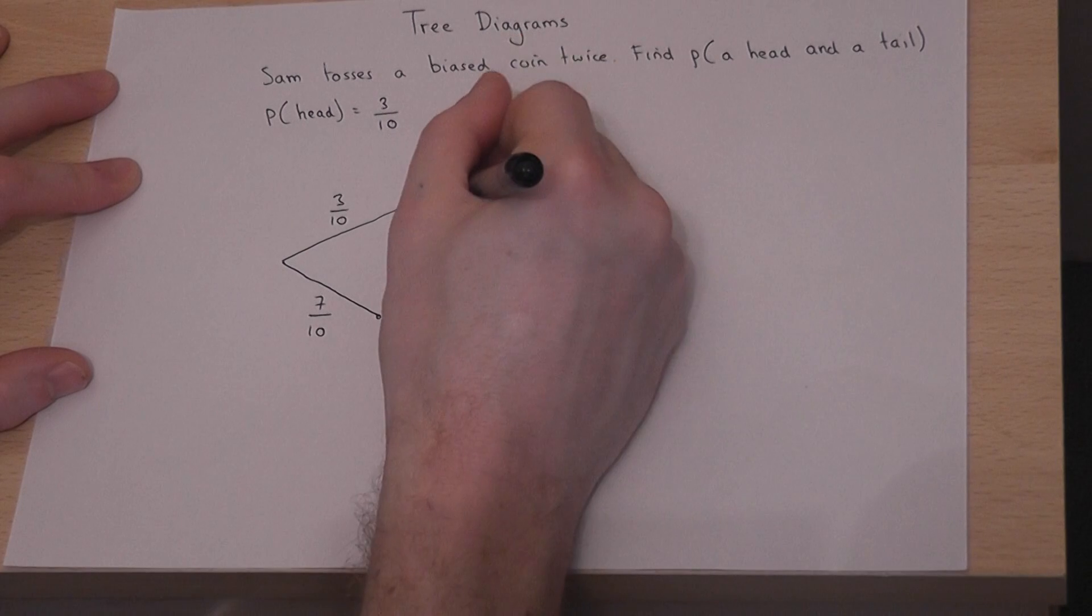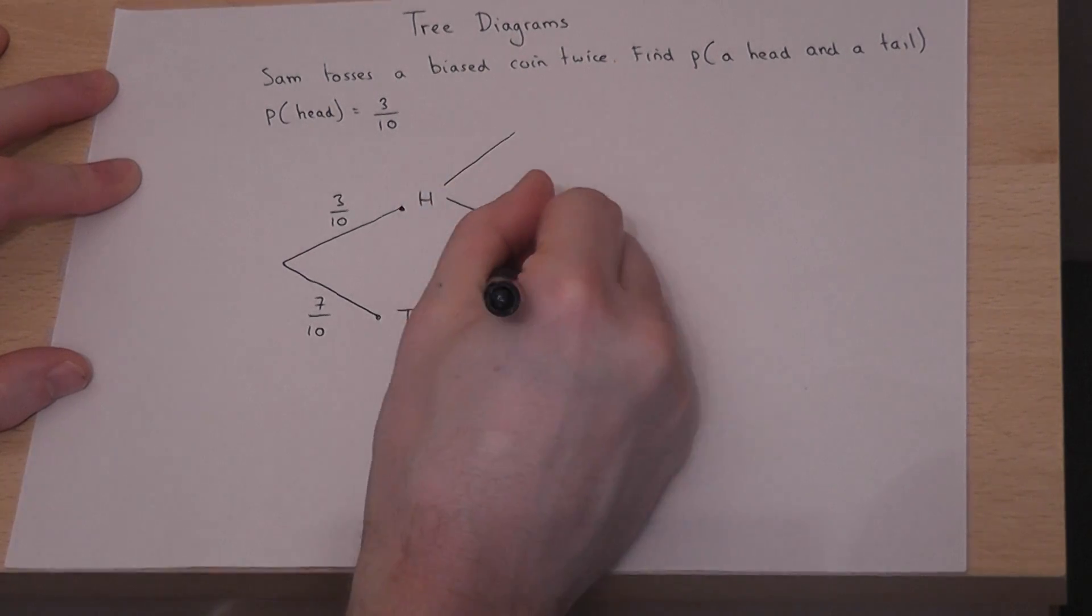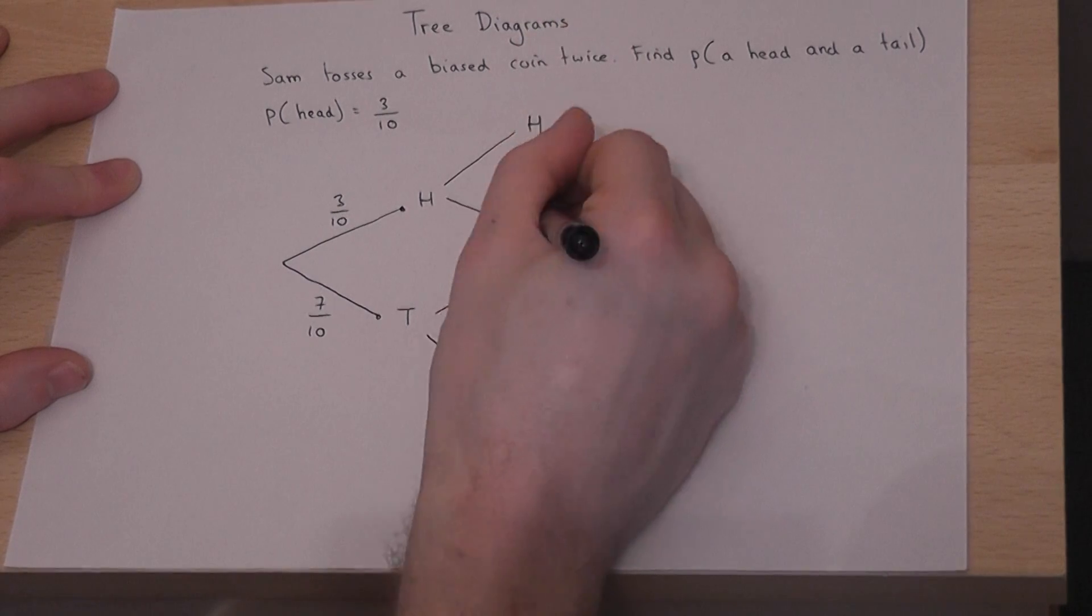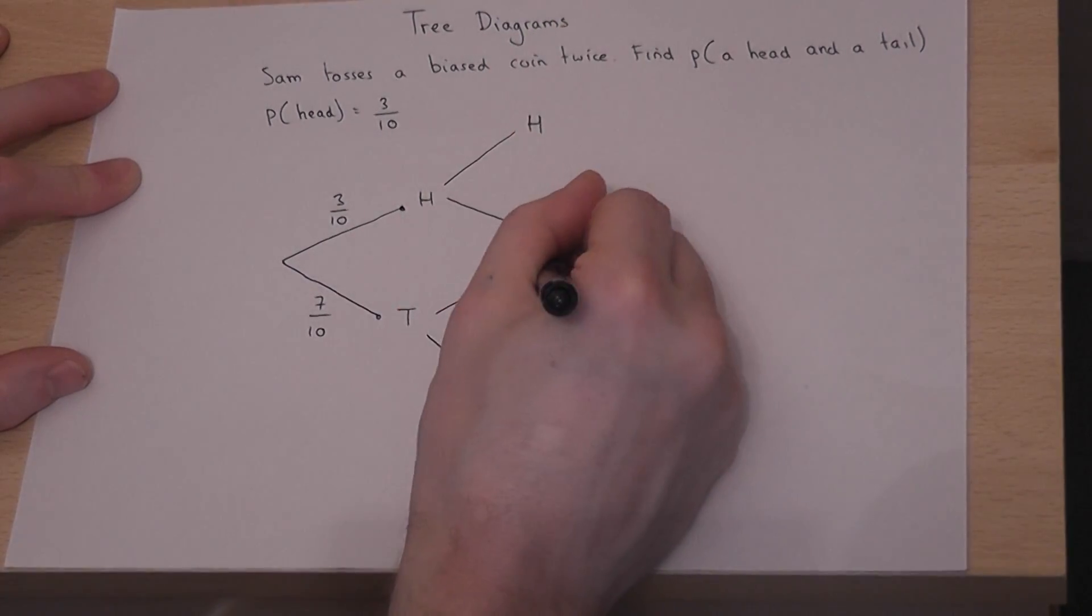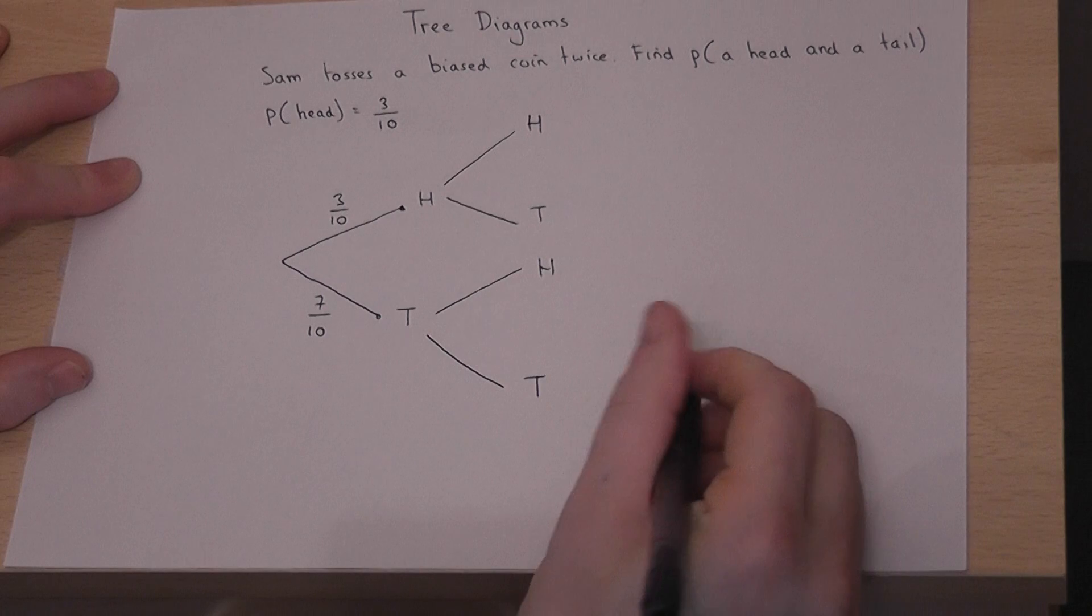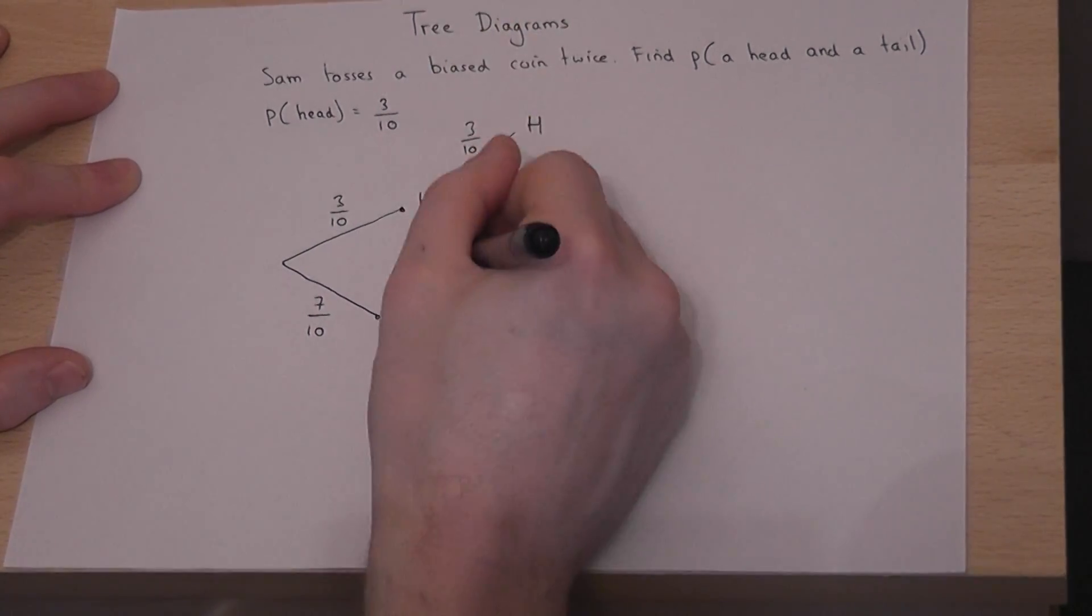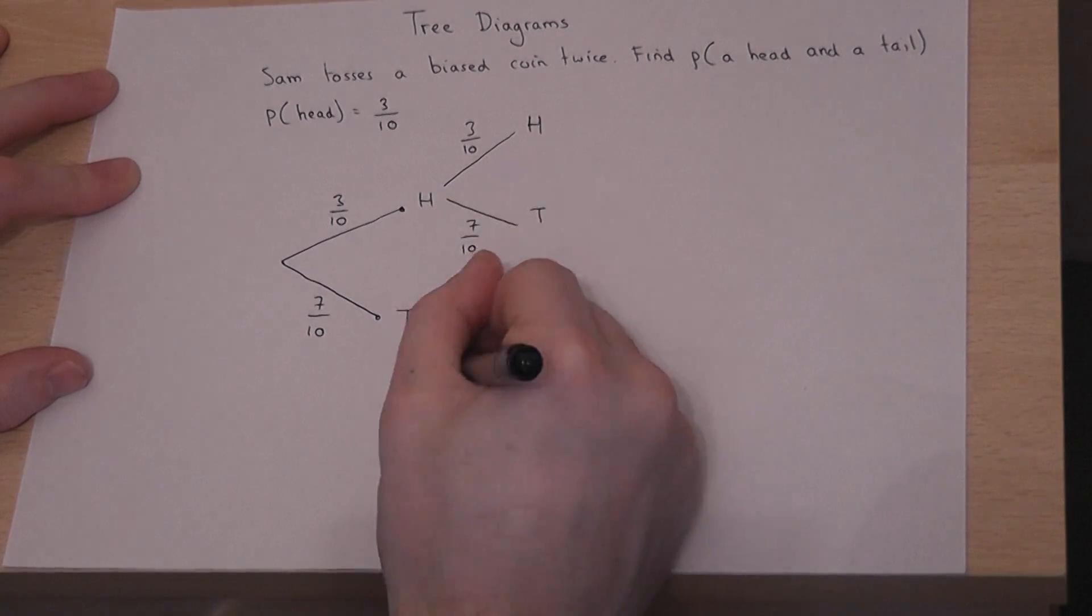He then tosses the coin for a second time. So it could be head then head, or head then tail, tail then head, or tail then tail. It's the same coin, so therefore the individual fractions stay the same.